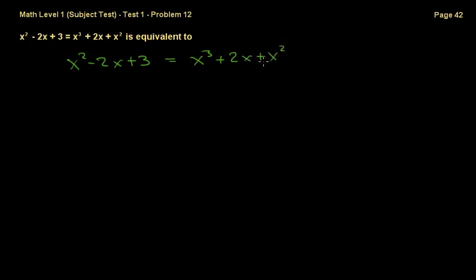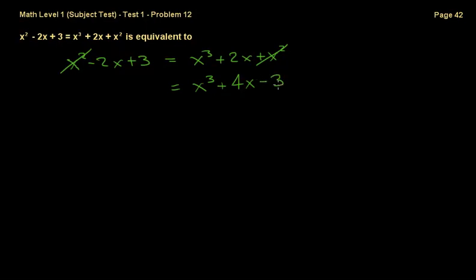Now if we subtract x squared from both sides of the equation, those two cancel out. x cubed remains the same, and if we add 2x on both sides of the equation, this one is going to be gone and we're going to get plus 4x. Now if we subtract 3 from both sides of the equation, we get minus 3. So 0 is equal to x cubed plus 4x minus 3.